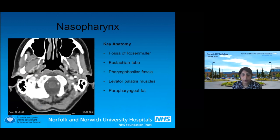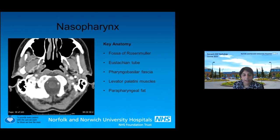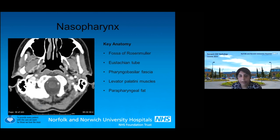The fossa of Rosenmüller is the commonest site for nasopharyngeal carcinoma, which is rare, but we've been having at least four or five cases per year in Norwich — it's gradually creeping up and it terrifies the oncologists because they don't see it often and treatment can be very tricky. The eustachian tube is this tube anteriorly. The pharyngeal basilar fascia is quite difficult to see normally, but it's the covering around the nasopharynx. It's really important in staging — if nasopharyngeal carcinoma breaks through this fascia, it can upgrade the tumor and means the patient is more at risk from nodal disease.